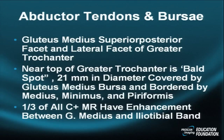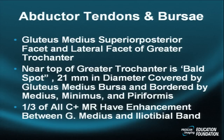Turning to the greater trochanter and abductor tendons and bursa: the gluteus medius is an underappreciated cause of symptoms, with attachments to the supraposterior facet and lateral facet of the greater trochanter. Near the top of the trochanter is a bald spot 21 mm in diameter, covered by the gluteus medius bursa and bordered by the gluteus medius, gluteus minimus, and piriformis.